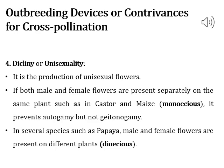Dicliny or unisexuality involves the production of unisexual flowers. If male and female flowers are present on the same plant (monoecious), it prevents autogamy but not geitonogamy. In dioecious plants, male and female flowers are present on different plants, which prevents both autogamy and geitonogamy.